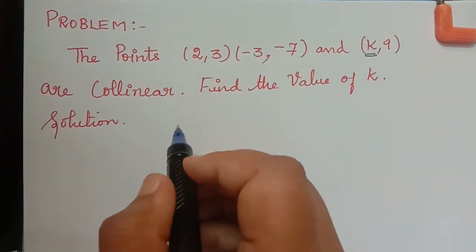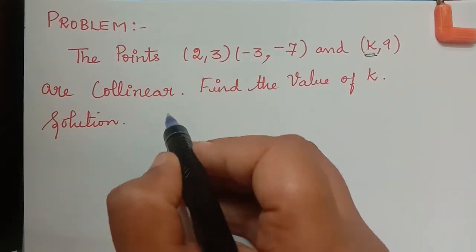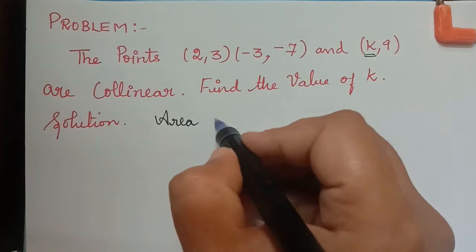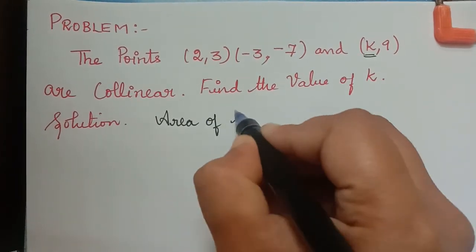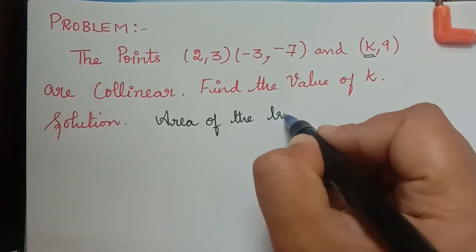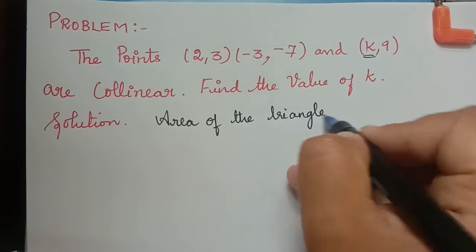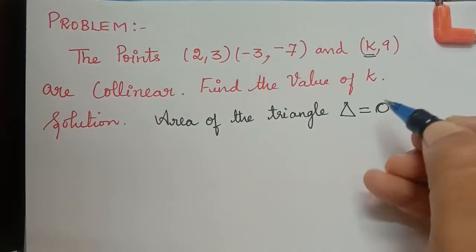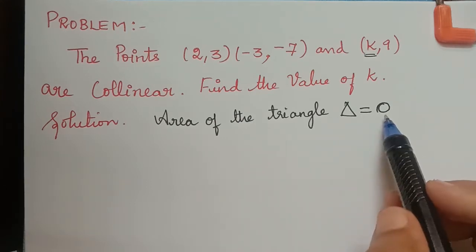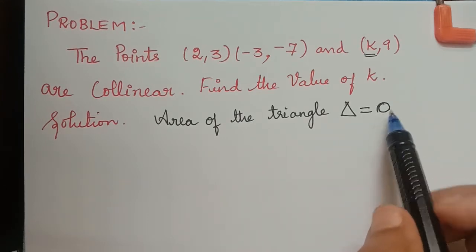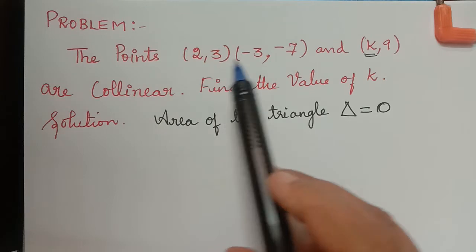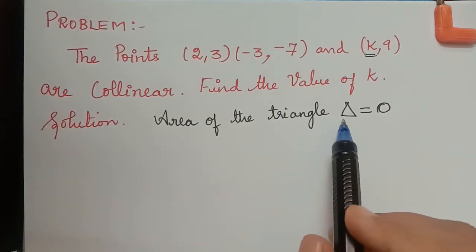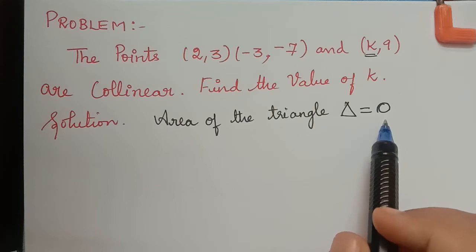Now we all know that three points are said to be collinear if the area of the triangle formed by the three points is equal to zero. So if this is zero, then the three points are said to be collinear. Here it is given that these three points are collinear, and therefore the area of the triangle will be equal to zero.